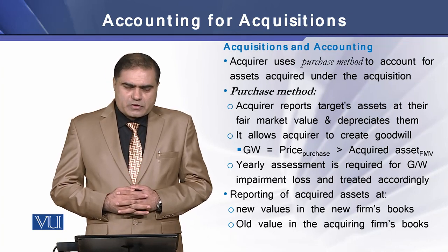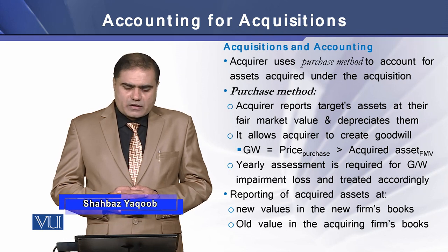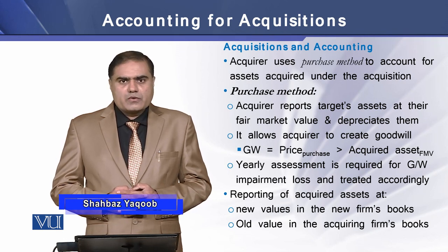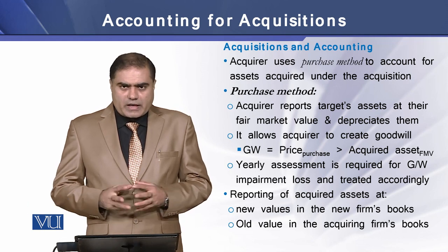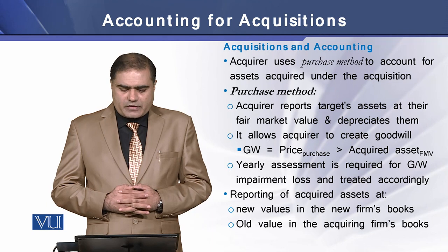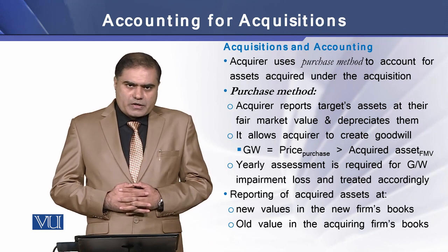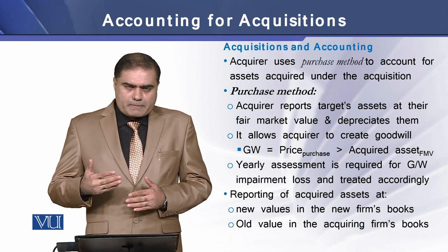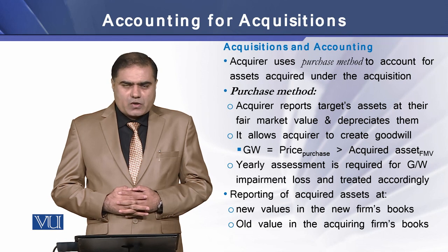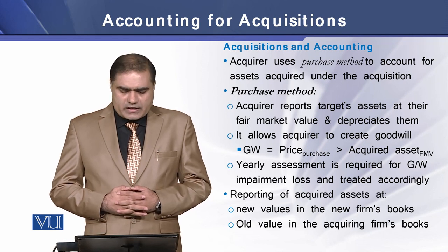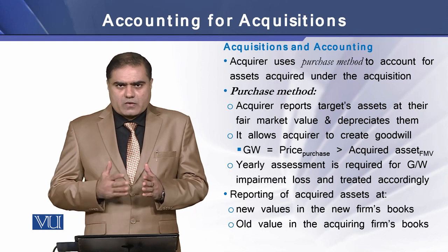The acquirer generally uses the purchase method to account for assets acquired under the acquisition deal. This purchase method allows an acquirer to report the target firm's assets at their fair market value and depreciate them according to their remaining useful life. This method also allows the acquirer to create goodwill, which is the excess of the purchase price over the fair market value of the acquired assets.